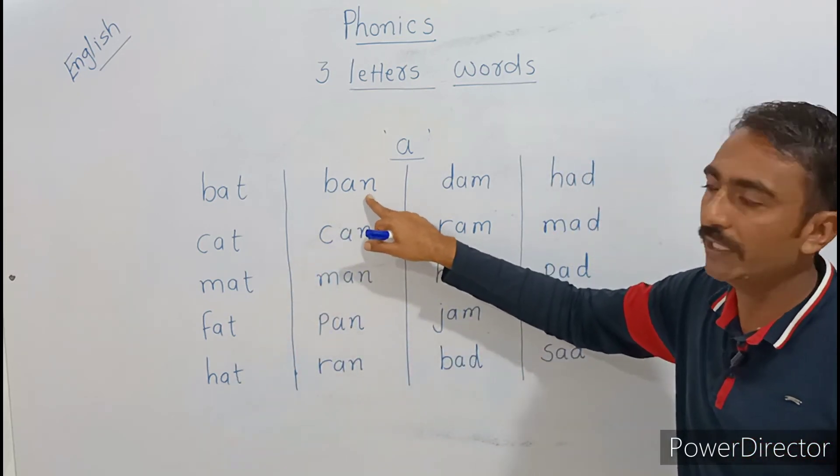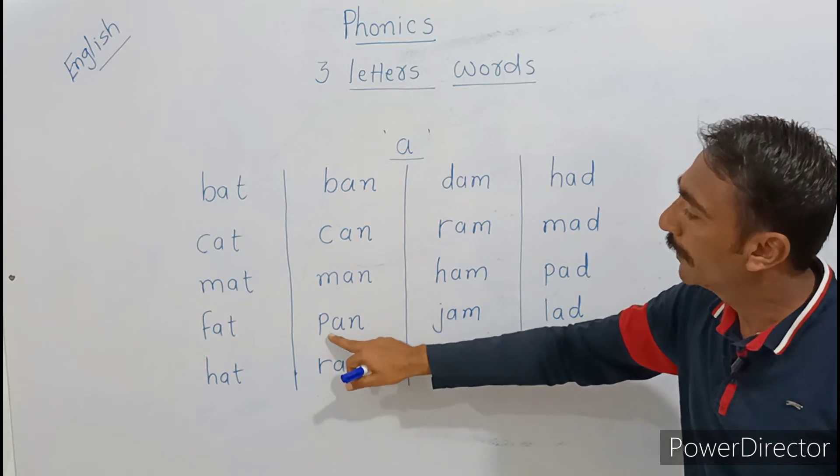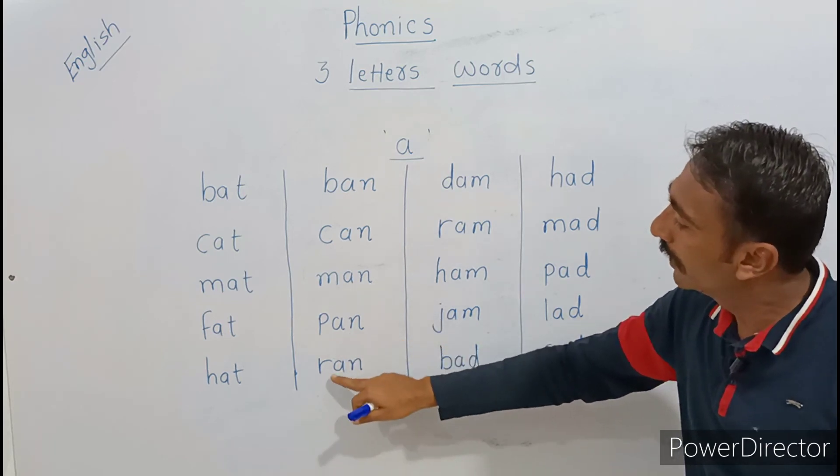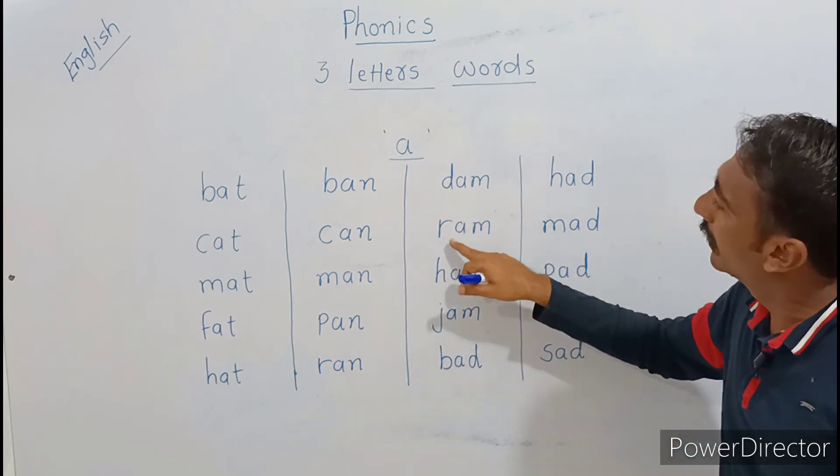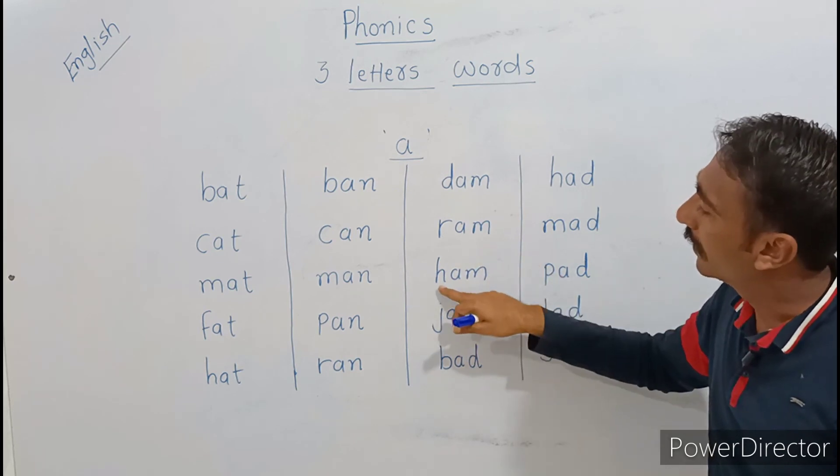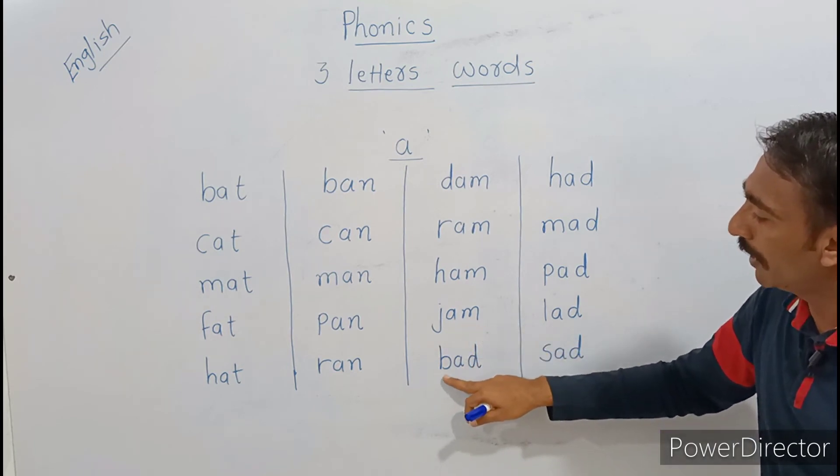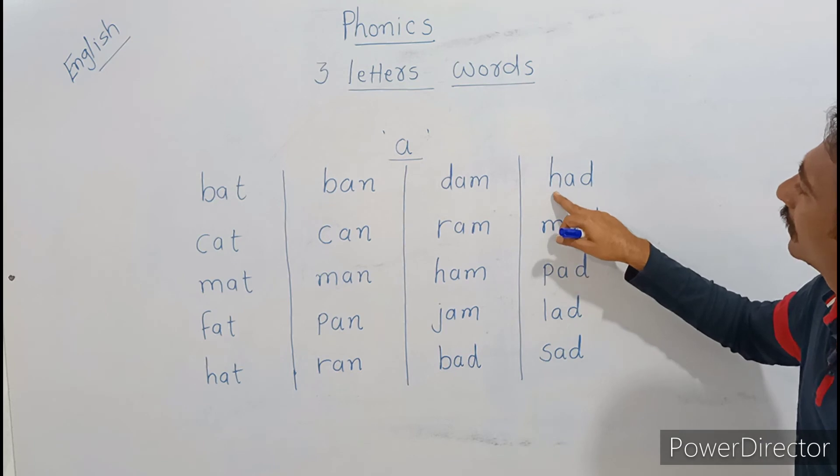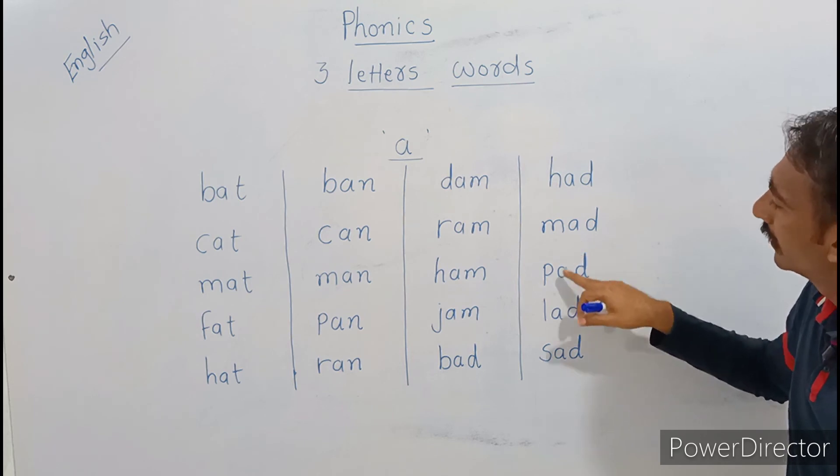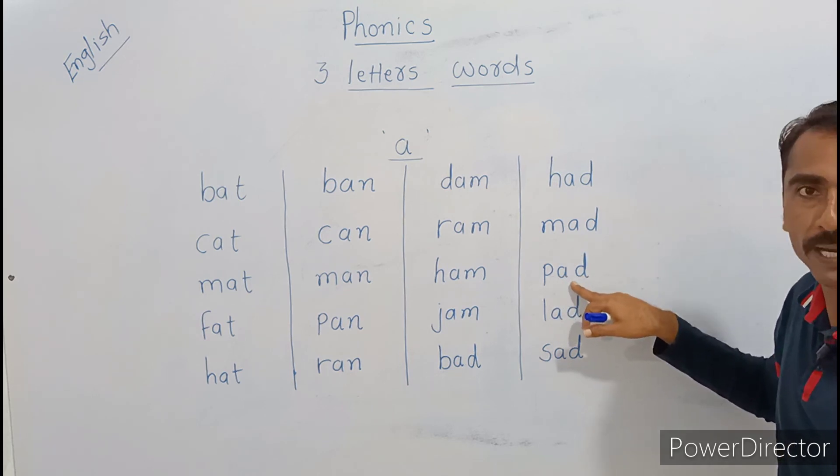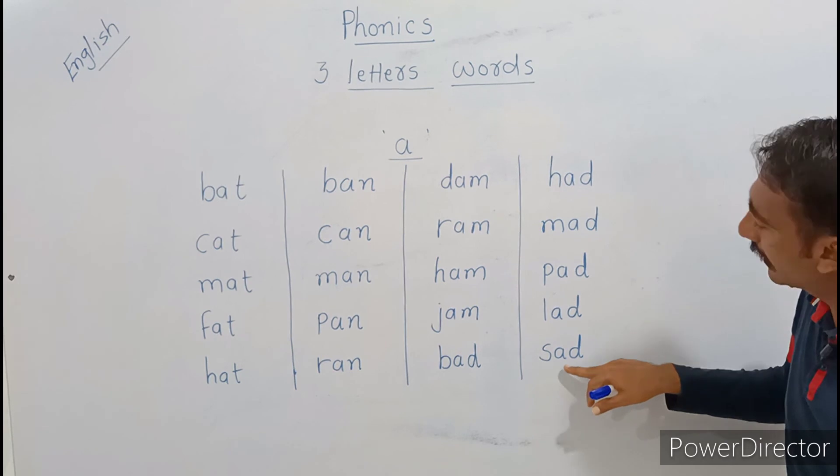B yaan ban. C-an, can. M-an, man. P-an, pan. R-an, ran. D-am, dam. R-am, ram. H-M, ham. J-M, jam. B-ad, bad. H-ad, had. M-ad, mad. P, p-ad, pad. L, l, l-ad, lad. Sad, s-ad, sad.